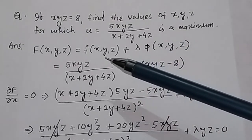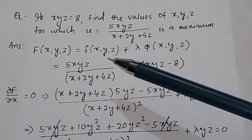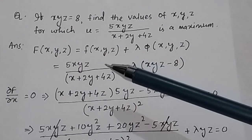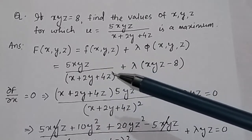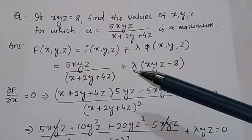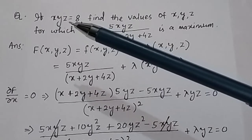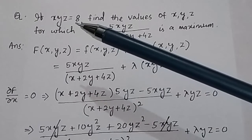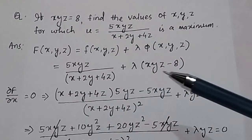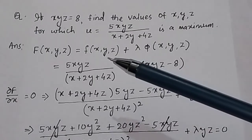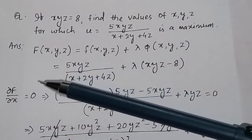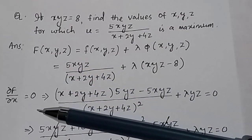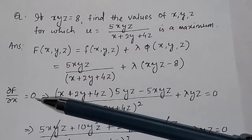Using constrained maximization by the Lagrange multiplier, F(x,y,z) equals the function u plus lambda times the constraint equation (5xyz minus 8) equals 0. To solve this using the Lagrange multiplier method, we take the partial derivative of this function with respect to x, y, and z, each set equal to 0.